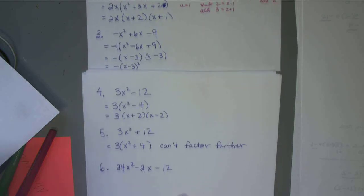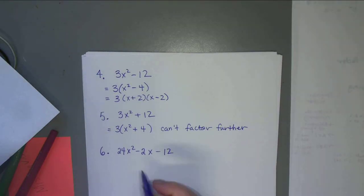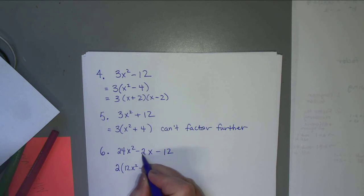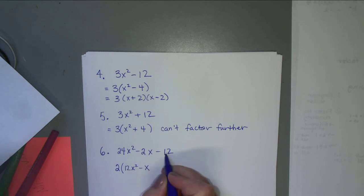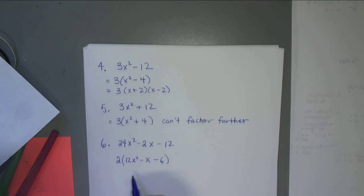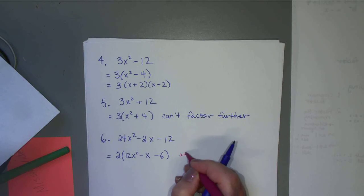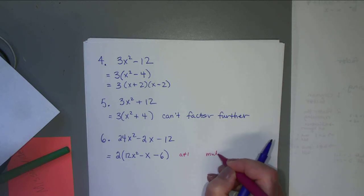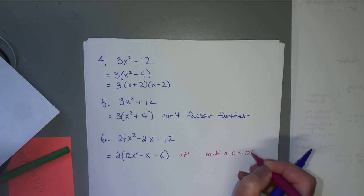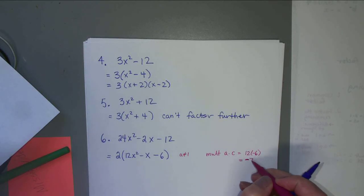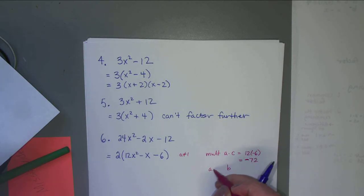For the last example, 24x² - 2x - 12: common factor is 2, giving 2(12x² - x - 6). Now a≠1, so a×c = 12×(-6) = -72, and we need to add or subtract to give b = -1. We need to factor 72. Factors 12×6 give 18 and 6 — neither is 1. Break it down: 72 = 2³ × 3² gives us many factor pairs to check.